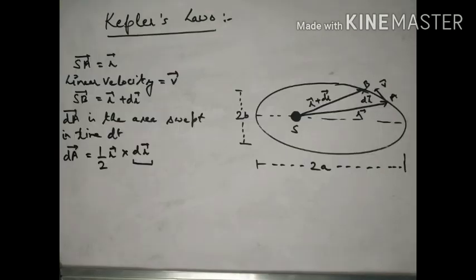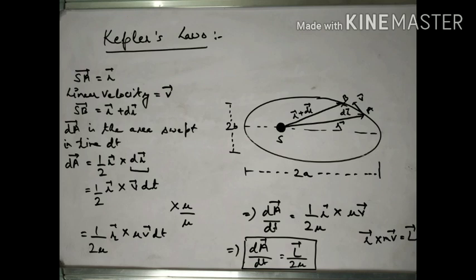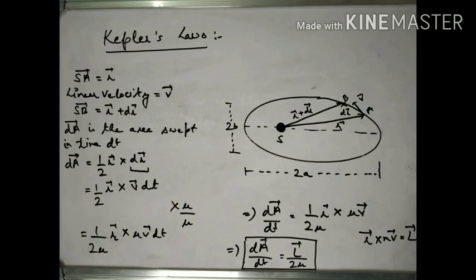In the sun-planet system, because of the elliptical path, 2a and 2b are the major and minor axes. The distance from the sun to the planet is SA = R, and SB = R + dR. The area dA swept in time dt can be written as dA = ½·R·dR. Since dR = V·dt, we get dA = ½·R×V·dt. Multiplying and dividing by reduced mass mu: dA/dt = (1/2mu)·R×mu·V.